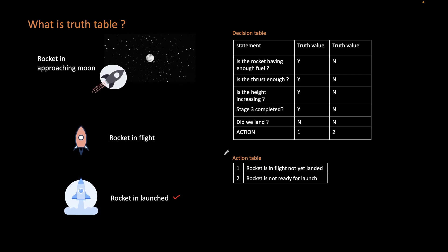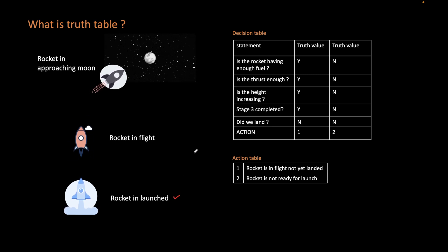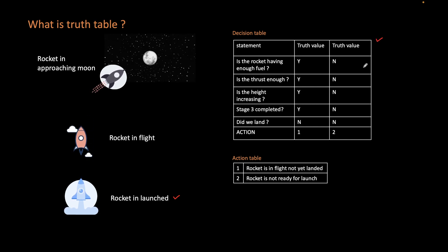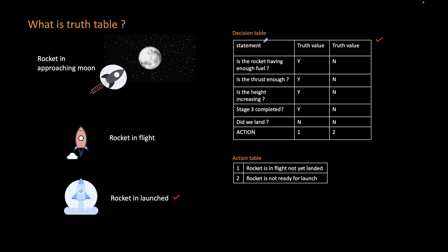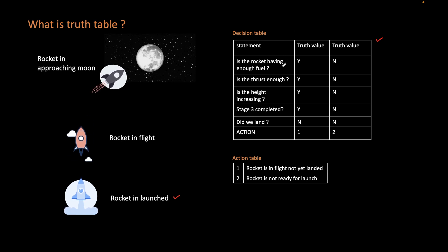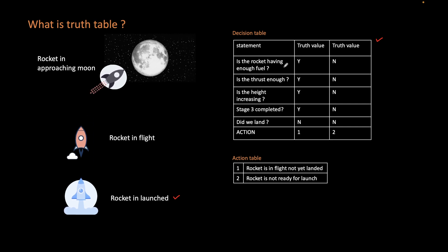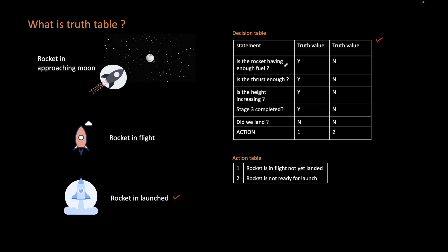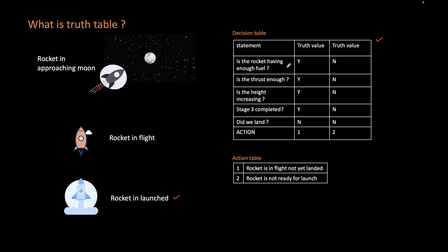We will see this one by one with a real-life example. Suppose we have launched the rocket. In that case, we have a truth table which you can see here. The truth table will have different statements or conditions which you need to validate based on their truth value. A truth value can be true or false — it can also be considered as yes or no.